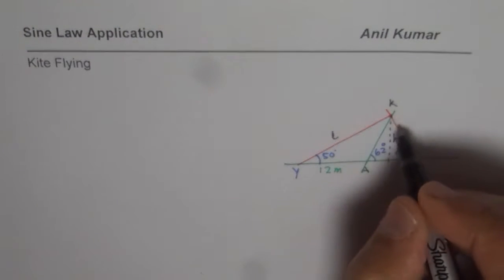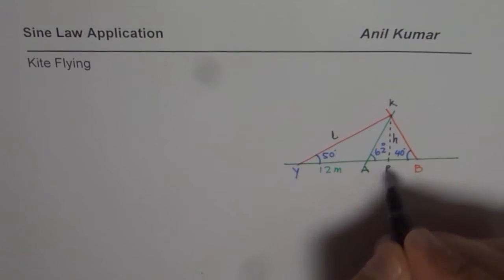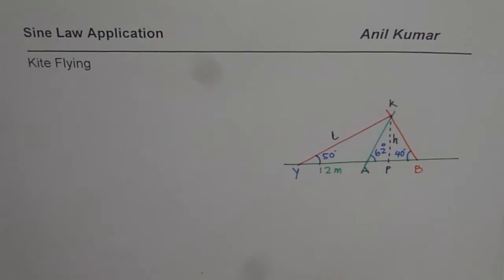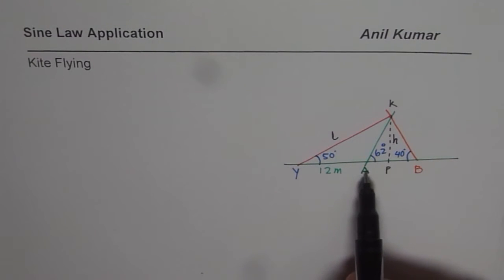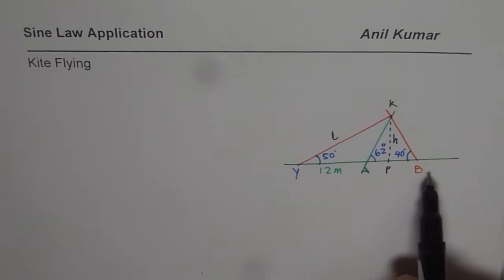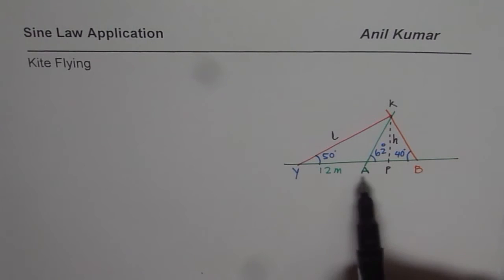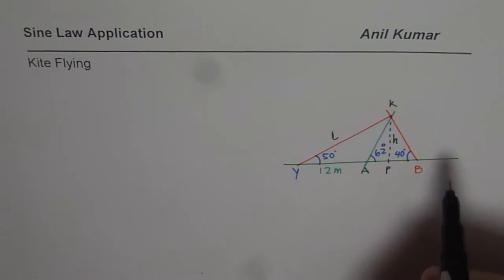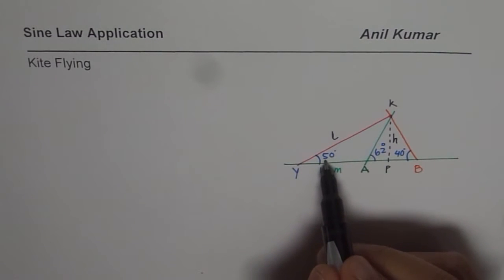Let's say this point is K. To find the height we will drop a perpendicular — let's say this point is P. We can actually extend this question and figure out what is the distance of the other friend from you. That could be an extension. So let's solve this question — you are flying a kite, your angle of elevation with the kite is 50 degrees.